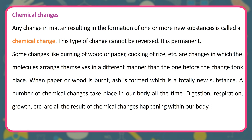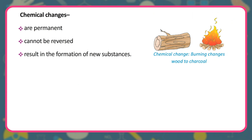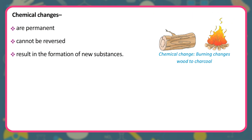Chemical changes: any change in matter resulting in the formation of one or more new substances is called a chemical change. This type of change cannot be reversed — it is permanent. Examples include burning of wood or paper and cooking of rice, where molecules arrange themselves in a different manner. When paper or wood is burned, ash is formed, which is a totally new substance. Many chemical changes take place in our body all the time — digestion, respiration, and growth are all results of chemical changes. Chemical changes are permanent, cannot be reversed, and result in the formation of new substances.